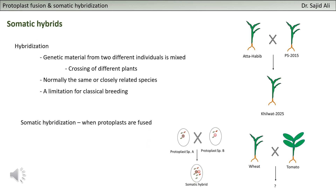In protoplast fusion, you are taking the protoplast from one species and the protoplast from the other species, and you have the possibility to fuse the protoplasts - basically you can mix the genetic material. You aim to create a desirable combination, a desirable hybrid. That is called somatic hybridization. You are taking protoplasts from two different species and combining them, with the aim to combine the traits of two unrelated plants.